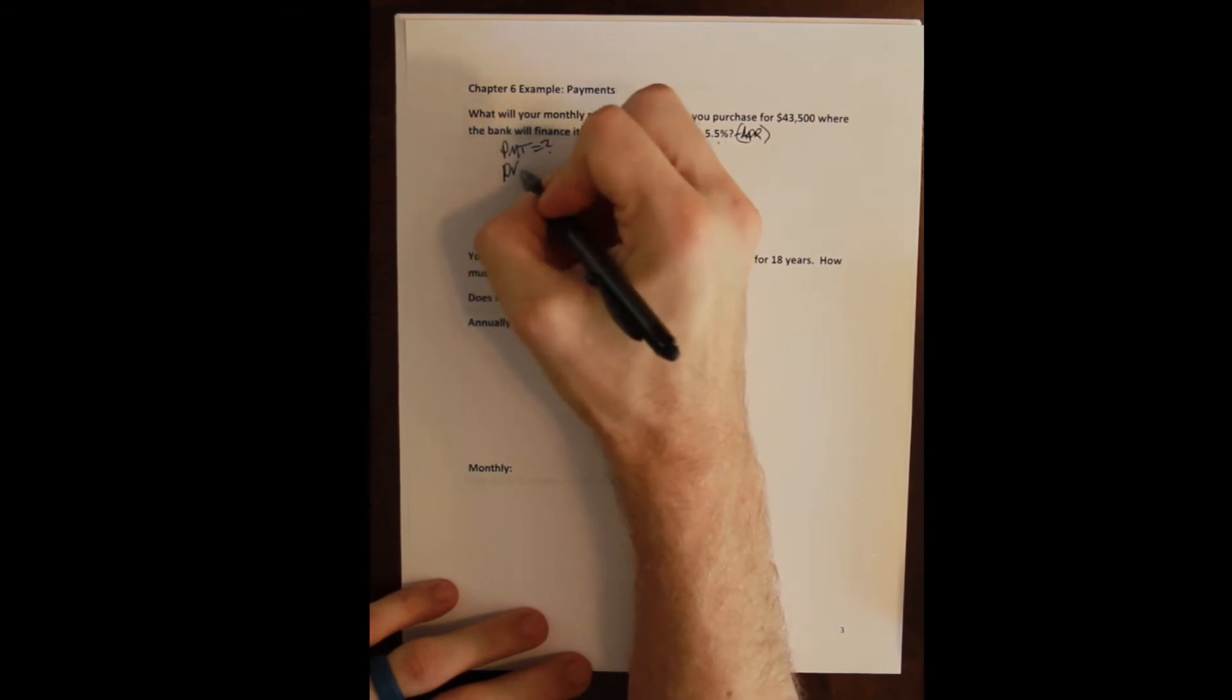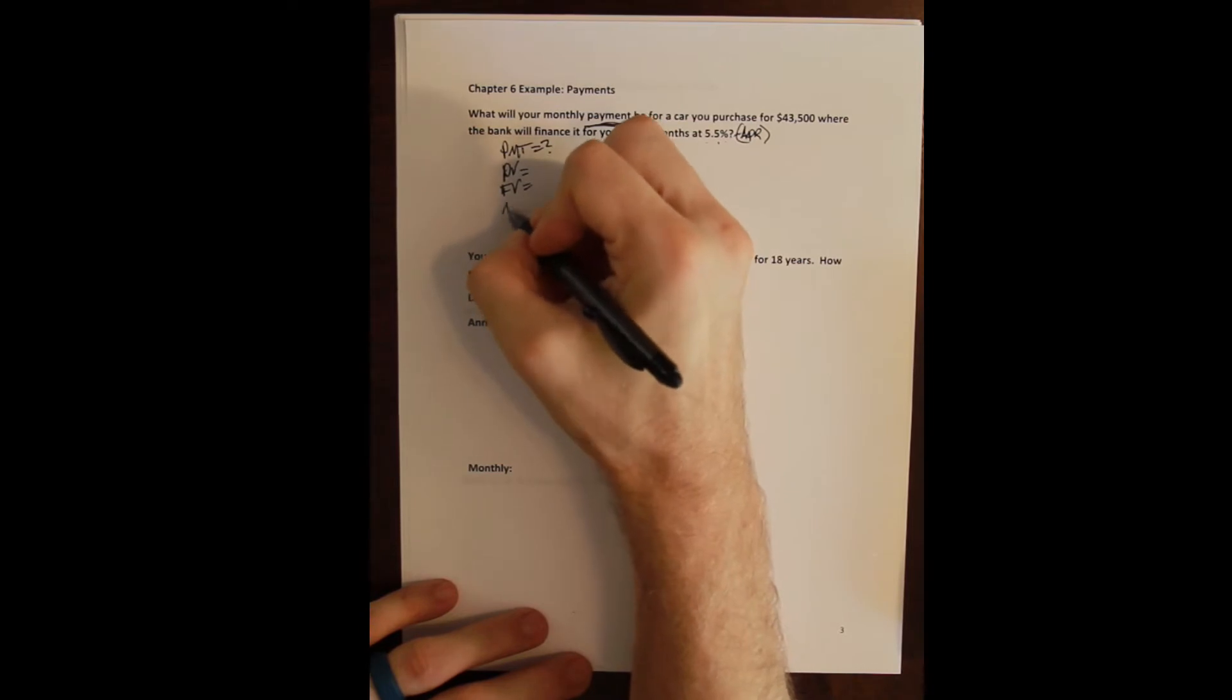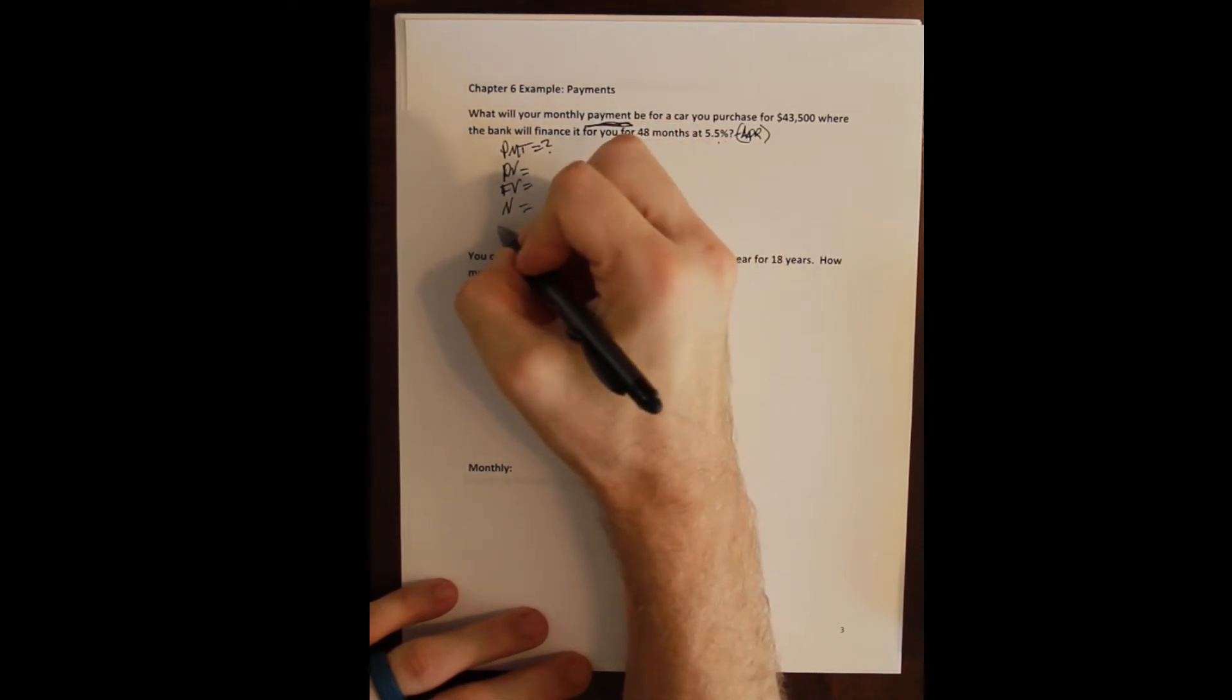So we need the present value. We want to know the future value. We need the number of compounding periods, the number of payments, and the IY.